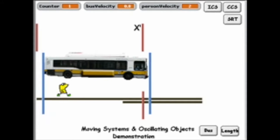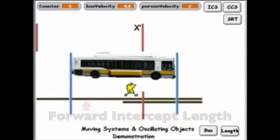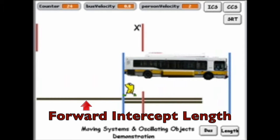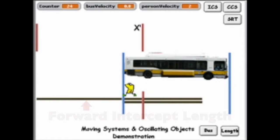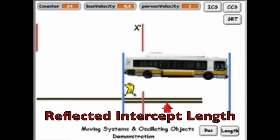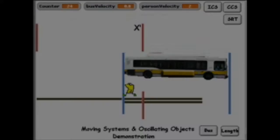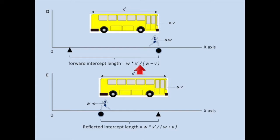Things get very interesting when we place both the bus and the man in motion at the same time. Mathematically, if the length of the bus is x prime, then we can find the forward and reflected segment times, and we can multiply these segment times by w to find the corresponding segment lengths. With these equations in hand, we can use them to answer questions about the distance the man walks.